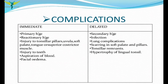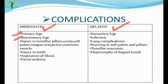Complications are divided into immediate and delayed. Immediate complications include primary hemorrhage occurring immediately following surgery, reactionary hemorrhage within 24 to 48 hours, injury to tonsillar pillars, uvula, soft palate, tongue, or the superior constrictor muscle of the pharynx, injury to teeth, aspiration of blood during surgery, and facial edema.